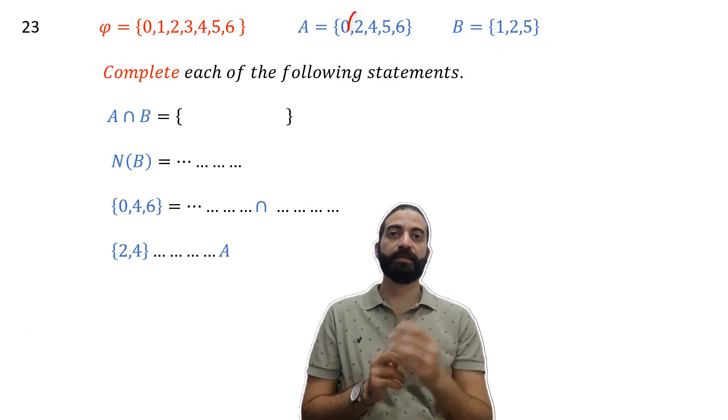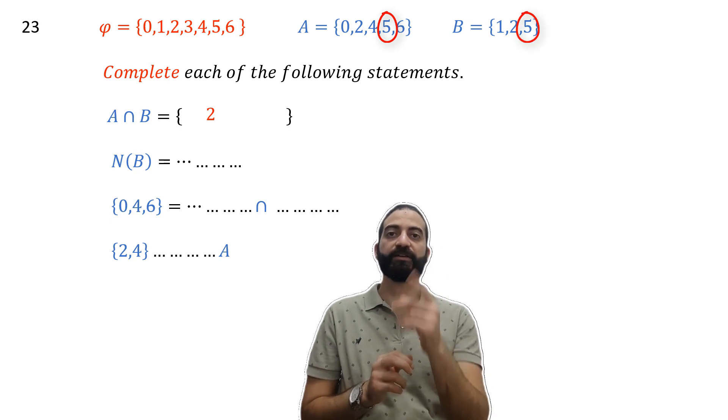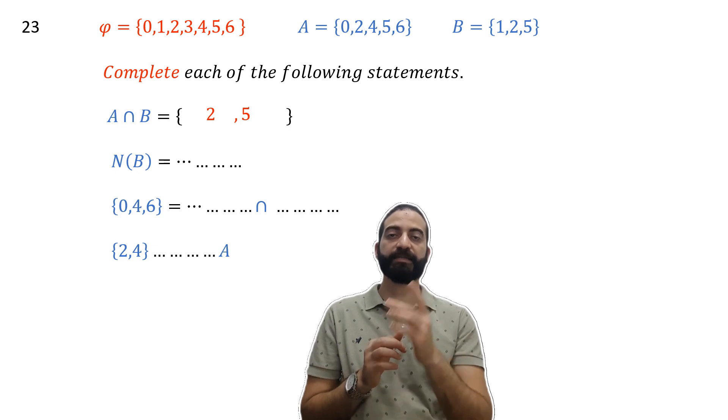Here we have 2, and here we also have 2, so we must put 2. Here we have 5, and also here we have 5, so we must write 5. In this way we get the answer A ∩ B = {2, 5}.